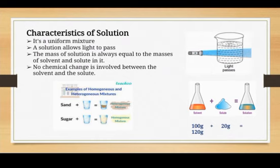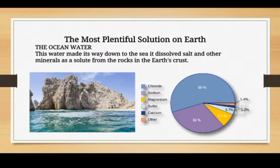We have two examples: sand plus water, and sugar plus water. If we mix a tablespoon of sand in a glass of water, it will not dissolve — so it will not be a homogeneous mixture. On the other hand, if we dissolve a tablespoon of sugar in water, it will dissolve and disappear quickly, making it an example of a uniform mixture.